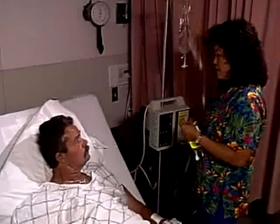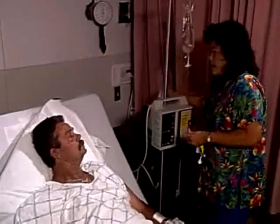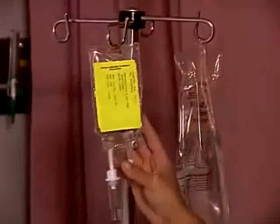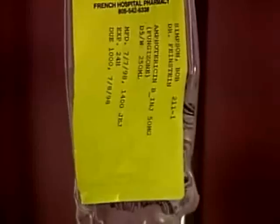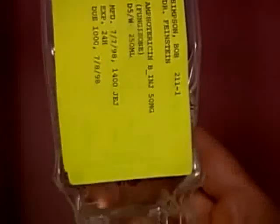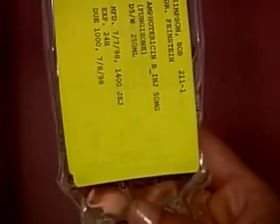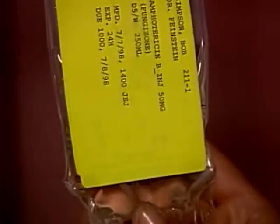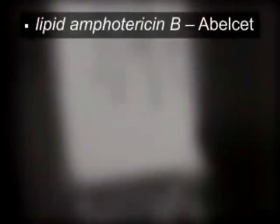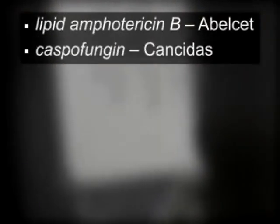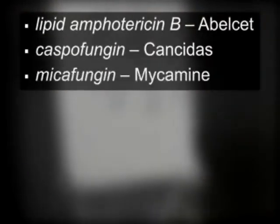The patient whose blood culture demonstrated a systemic candidiasis was treated with the antifungal agent amphotericin B intravenously. Non-lipid amphotericin B (Fungizone) is the agent primarily used for systemic fungal infections. However, it has many side effects and other agents are coming into use for this disorder, including lipid amphotericin B (Abelcet), caspofungin (Cancidas),